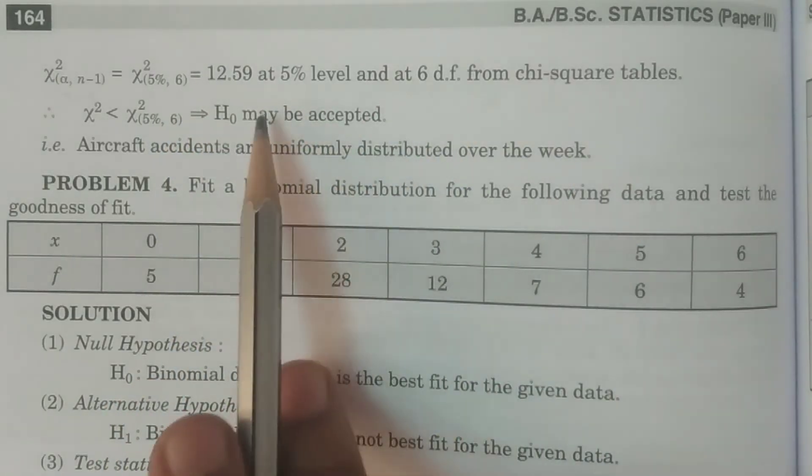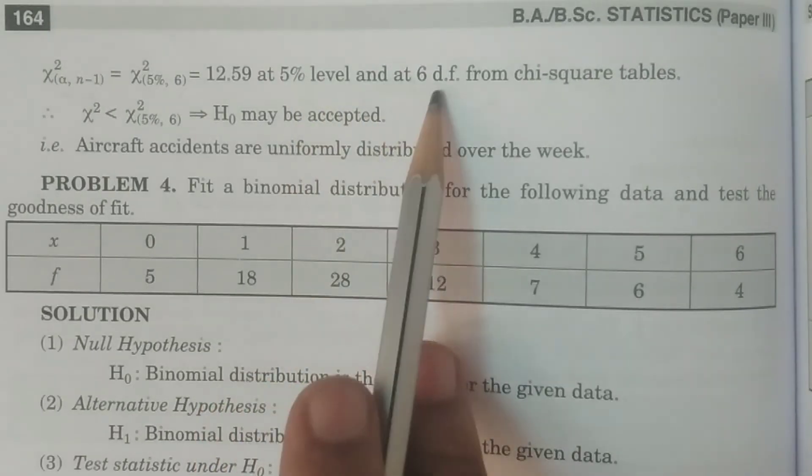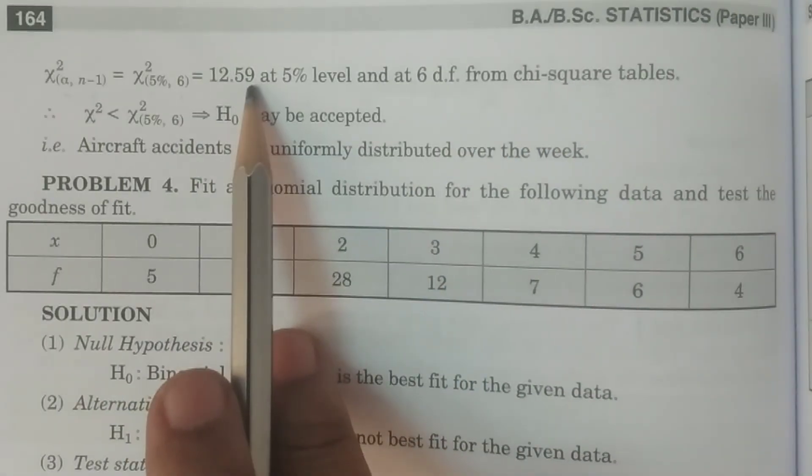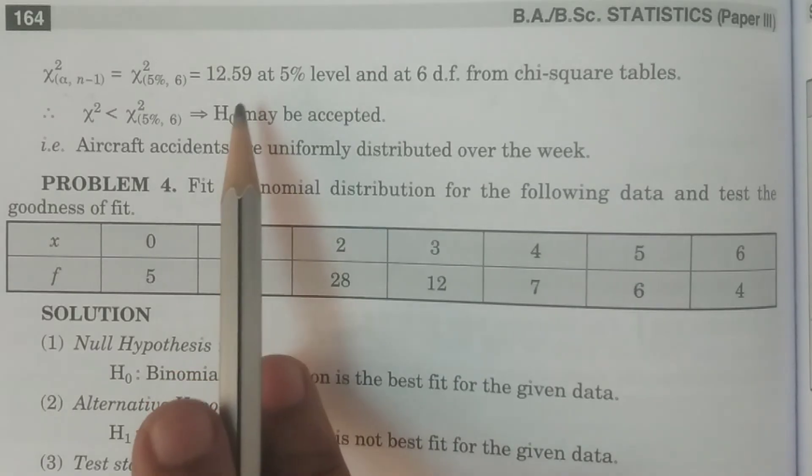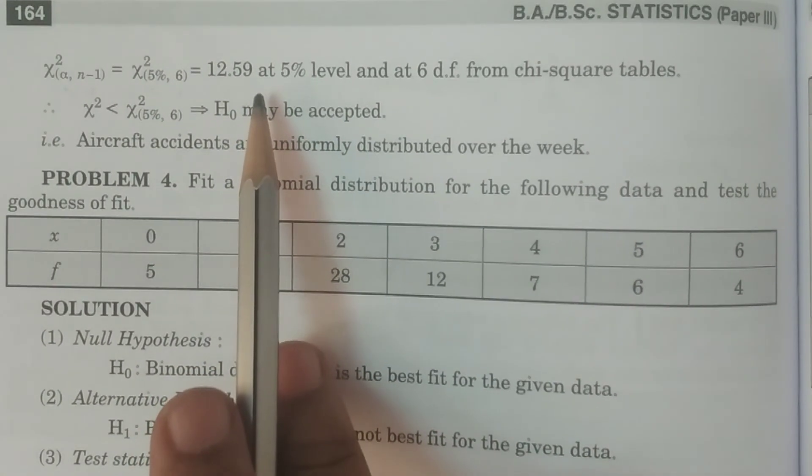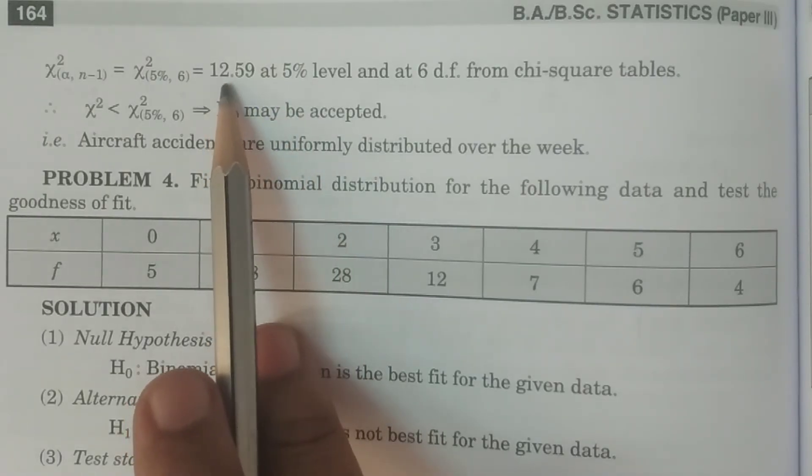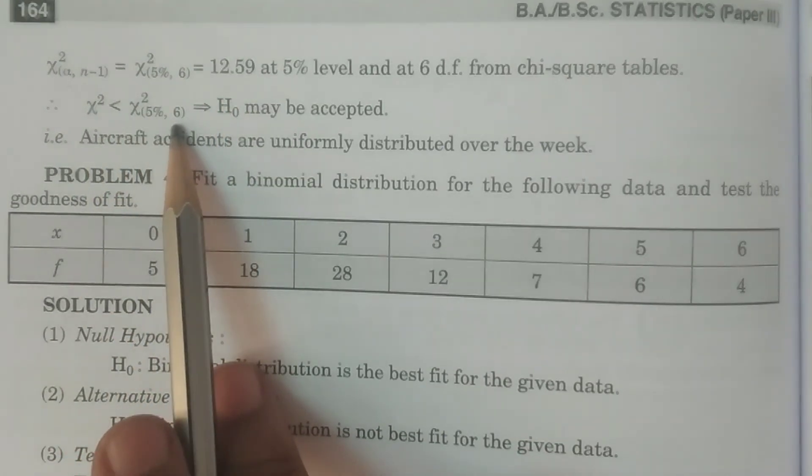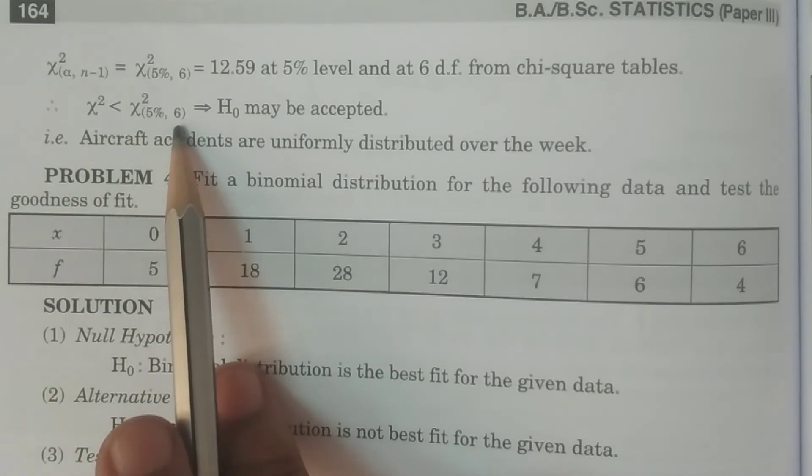From the chi-square tables, 5 percent level and 6 degrees of freedom from the chi-square tables, the value is 12.59. And you compare with that calculated value and tabulated value, calculated value is around 4 point and it is 12 point. 4 point is less than 12.59. Therefore, chi-square is less than chi-square 5 percent comma 6 degrees of freedom. Hence,